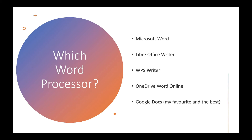Which word processor should you use? Any one you want — I recommend the online ones. LibreOffice is completely free for anyone on any operating system on a desktop or laptop. WPS Office is completely free as well and comes with a Word alternative, an Excel alternative, and a PowerPoint alternative. OneDrive has Word, Excel, and PowerPoint online too.